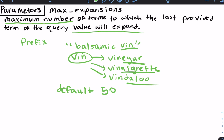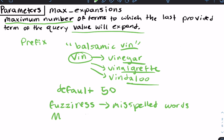If you think back to a previous video on fuzziness, max expansions was a supporting parameter there too — but for fuzziness it's about misspelled words, while for match phrase prefix it's about prefixes. You can lower this number, for example setting max expansions to 3, and by making it a smaller number you can improve performance.